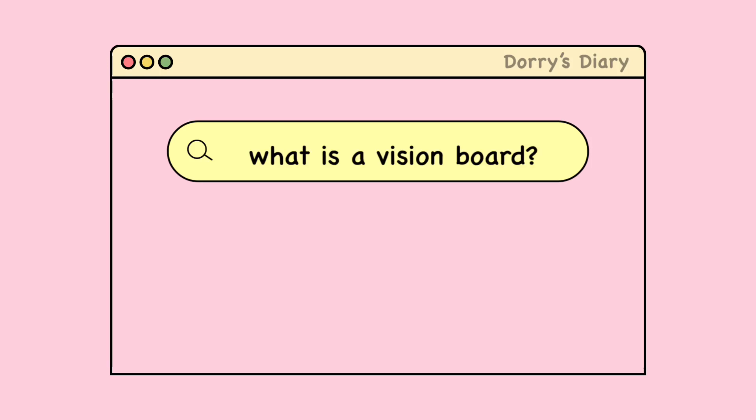So first of all, what is a vision board? A vision board is a representation of our dreams and our goals. It's something to remind us on a daily basis what we're trying to achieve. A vision board is usually full of pictures and texts that can remind us of our dreams and our goals.